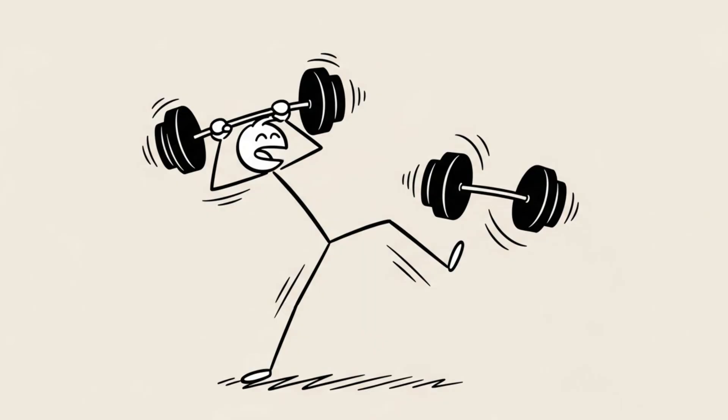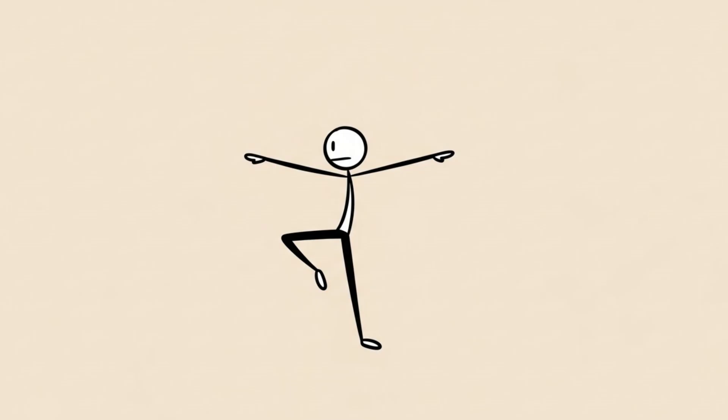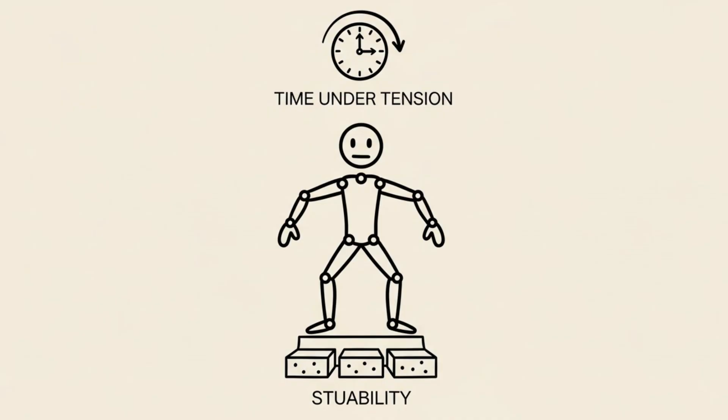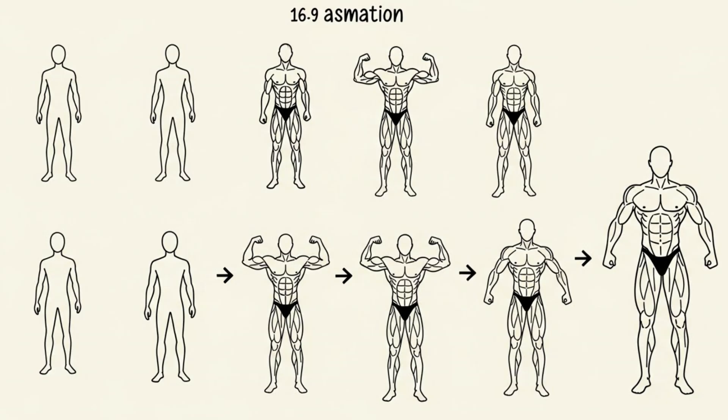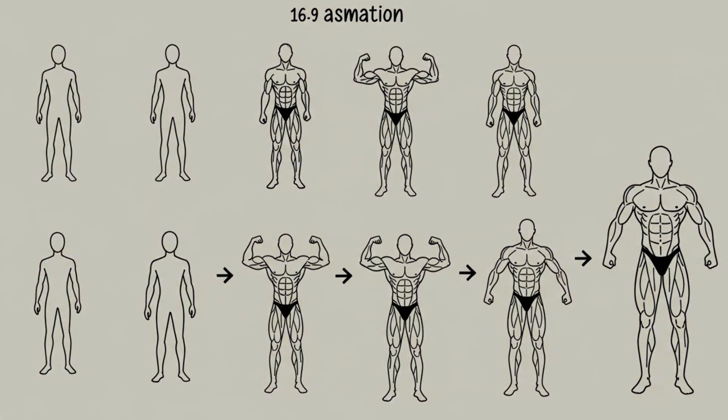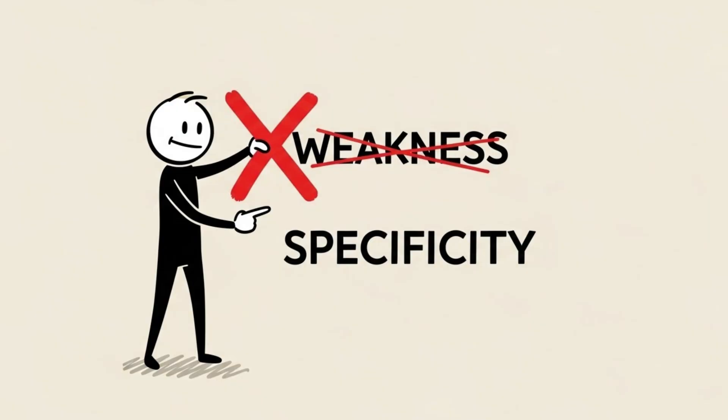I quit the heavy weights and switched to Pilates and bodyweight exercises. I focused on time under tension and stability rather than max load. The result? My muscles lengthened, the bulk subsided, and my physique completely transformed. It wasn't about weakness. It was about specificity.